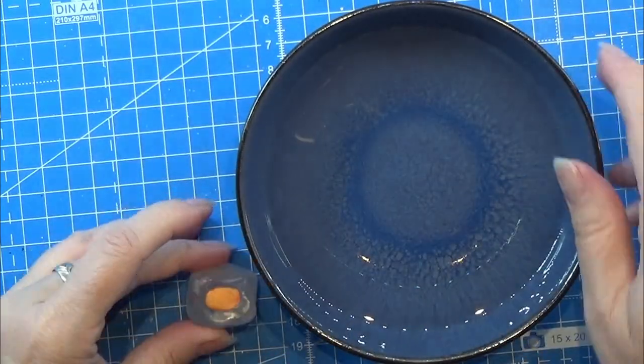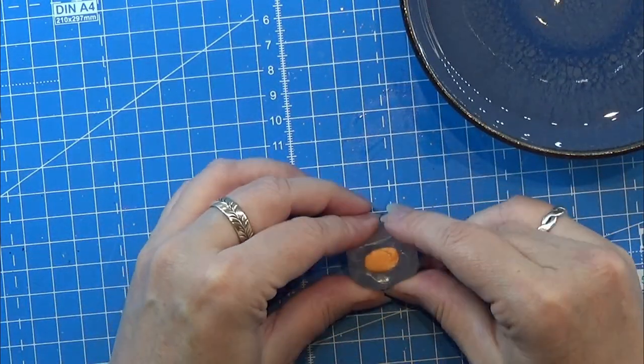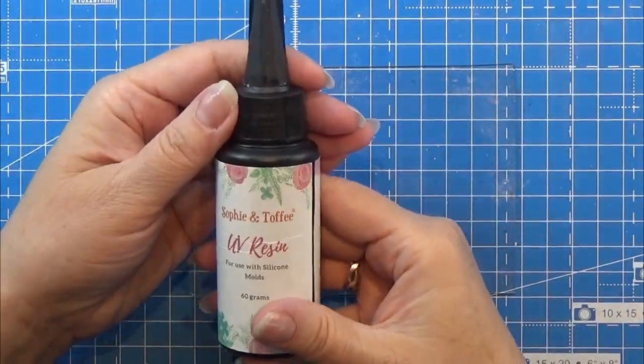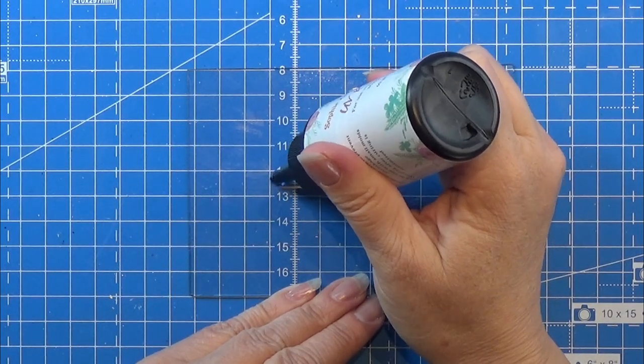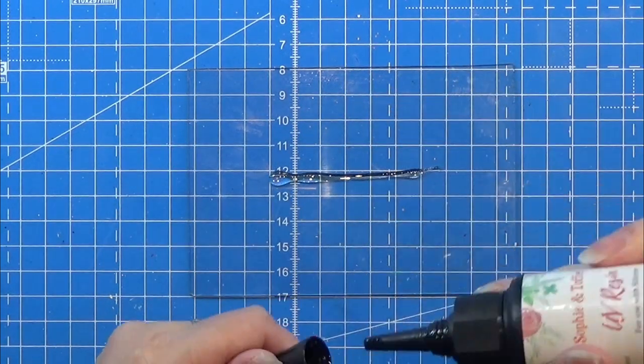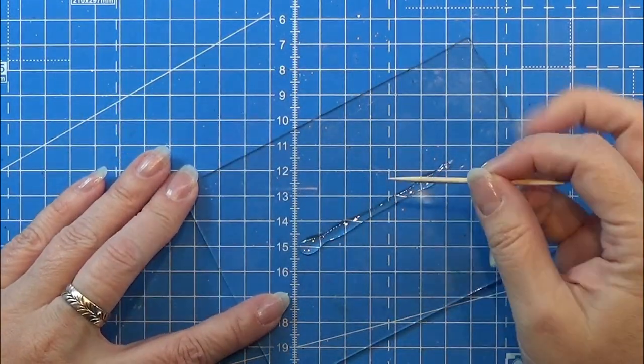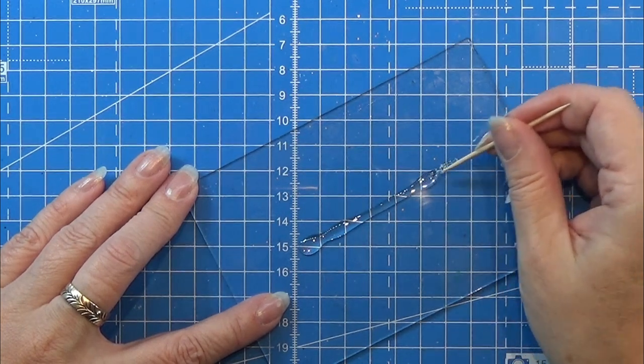You can also use it with epoxy resin as I am going to do right here. First I am going to use my UV resin on a glass plate and I am making a bead here along the glass plate. And this one turned out way too big for me.